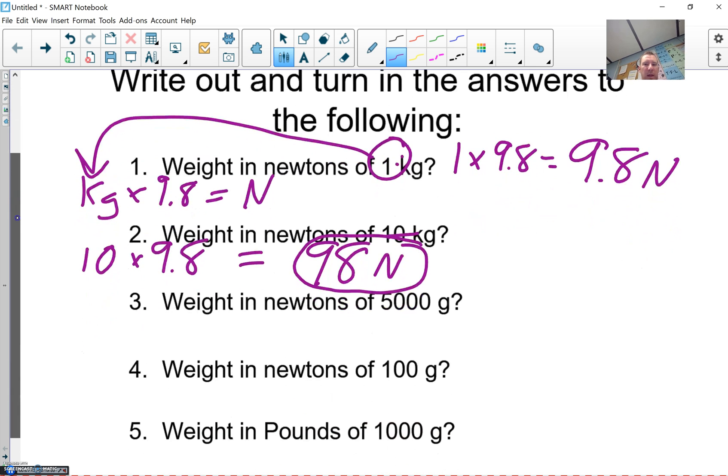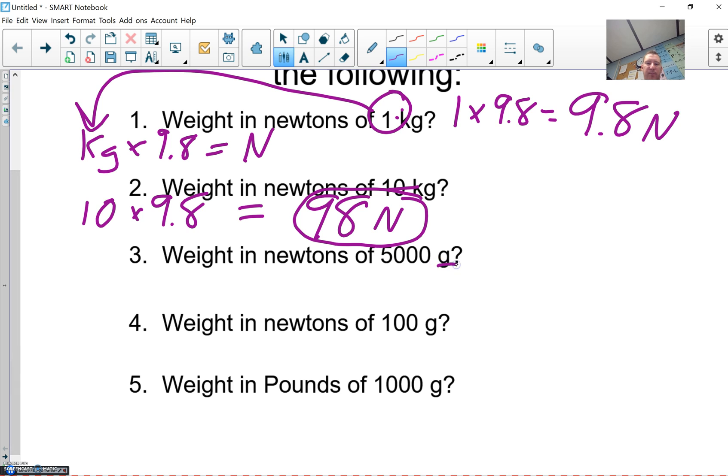We're going to take a look at grams now. So in the last video, we started to look at some of the conversions, like 1,000 grams equals 1 kilogram. Knowing that, we can say 2,000 grams is 2 kilograms, 3,000 grams is 3 kilograms, 4,000 grams is 4 kilograms, 5,000 grams is 5 kilograms. Again, kilo means thousand. So instead of saying 1,000, we say kilo.